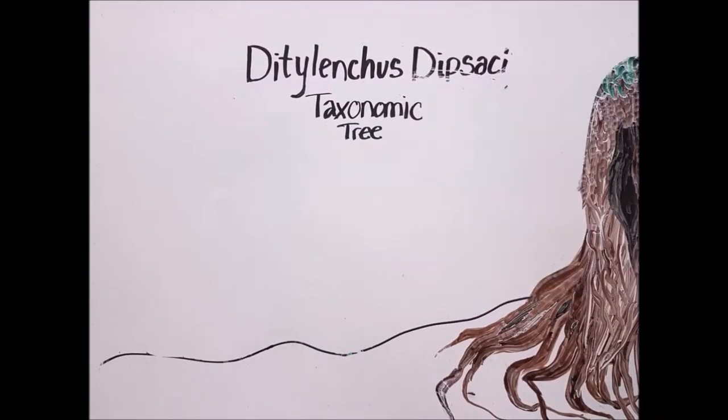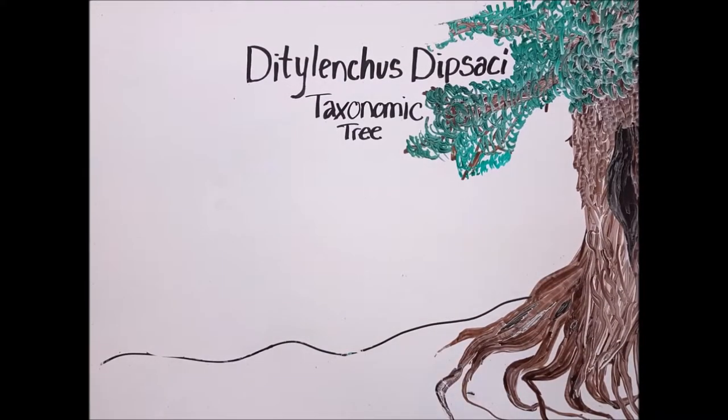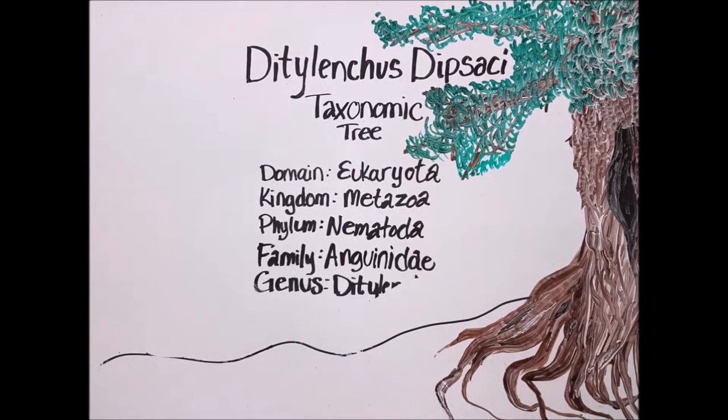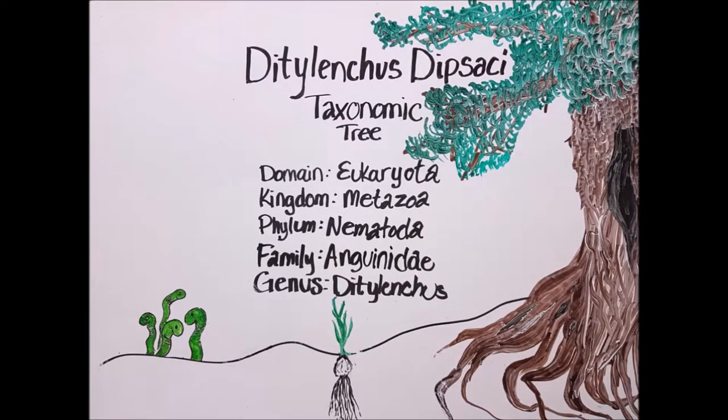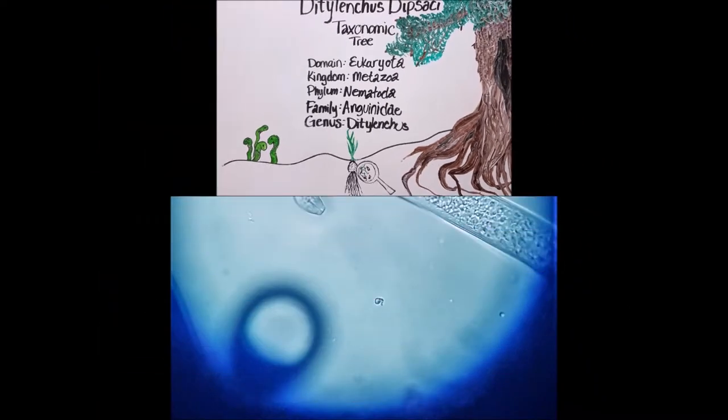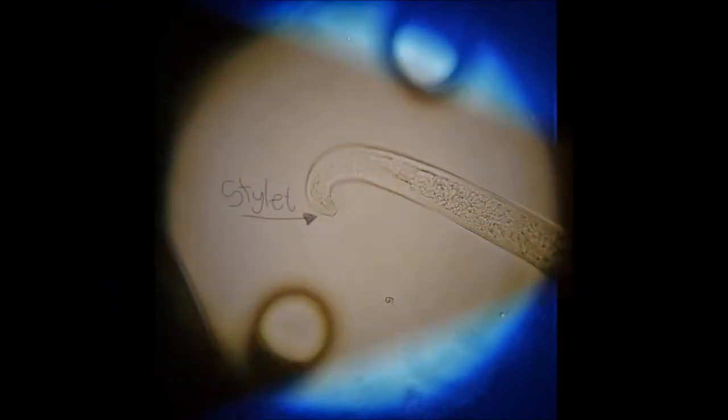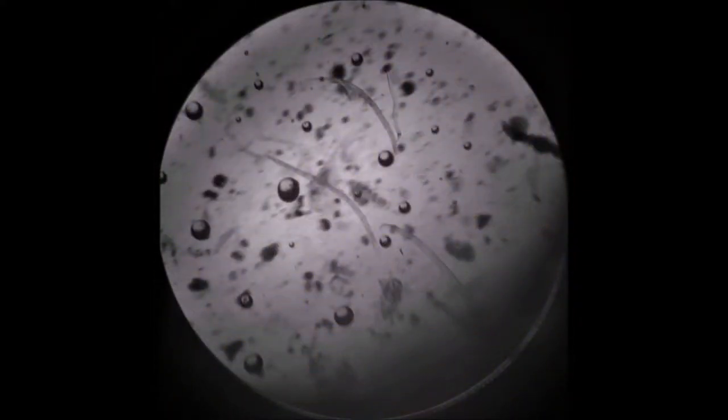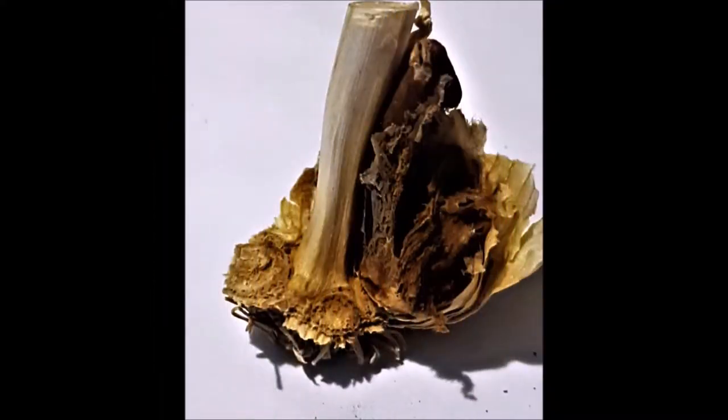Nematodes are microscopic worms that irritate farmers and gardeners all over the world. It is recognized as Ditylenchus dipsaci and can cause up to 90% yield loss in affected crops. It is a eukaryote and is part of the metazoan kingdom. Nematodes can only be seen under a microscope and can be identified by their stylet. This stylet helps them puncture the tissue of the plant which damages the crop. This also causes the host plant to be more susceptible to other pathogens.